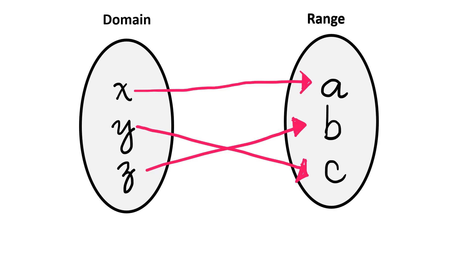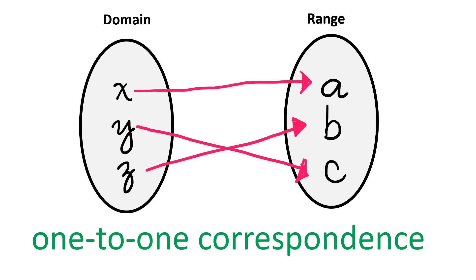Given a mapping diagram. As you can see, this is the set of domain, while the second one is the set of range. Each element in the domain is paired only once with each element in the range. Therefore, this mapping diagram shows a function, and specifically it is a one-to-one correspondence.